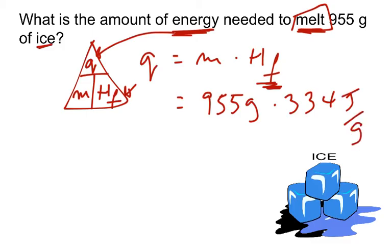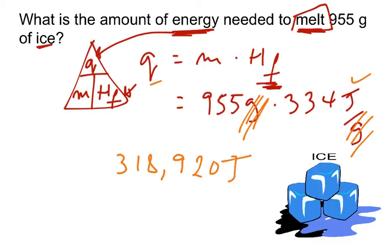And you do some simple cancellations. The grams and the grams, they cancel, you'll be left with joules, that makes sense, since we're looking for heat energy, and the final answer is this number right here, 318,920, if I'm not mistaken, joules. All right, and that's it.